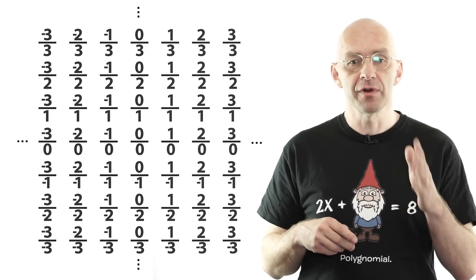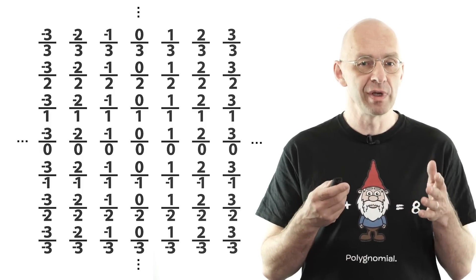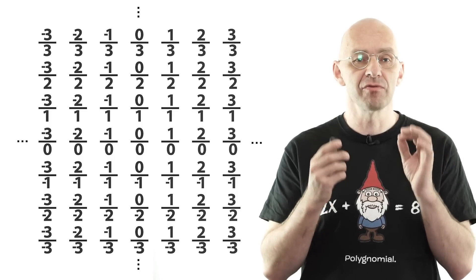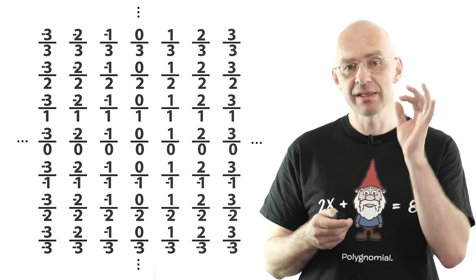Now we'll do something which at first glance may seem impossible. We'll make up a list that contains every rational number exactly once.